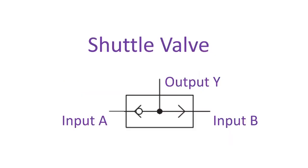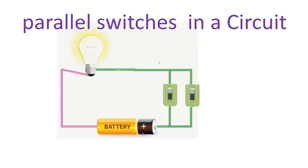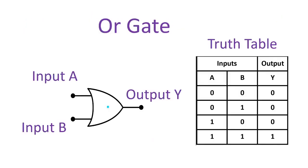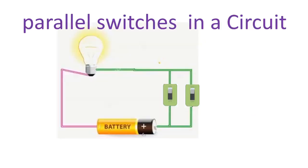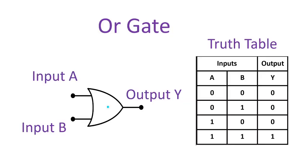For shuttle valves, they work on the same principle as a parallel circuit and OR gate logic. The output of the shuttle valve is true if either of the two inputs are true. The bulb glows if either of the two push buttons are pressed, or both pressed together. The OR gate output is true if either of the two inputs are true, otherwise it's false.